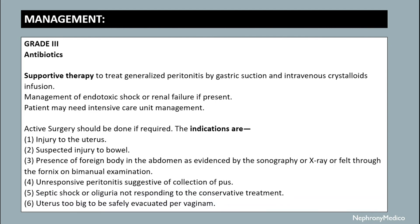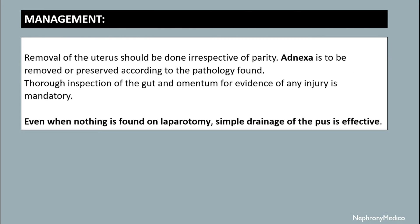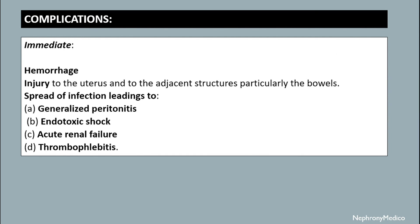For Grade 3, management includes antibiotics and supportive therapy for generalized peritonitis by gastric suction and intravenous crystalloid infusion. Endotoxic shock and organ failure, if present, should be managed appropriately. Intensive care unit management is required. Removal of the uterus should be done irrespective of parity. The adnexa should be removed according to the pathology. Thorough inspection of the gut and omentum for evidence of injury is mandatory, and even when nothing is found, laparotomy with simple drainage of the abscess is effective.